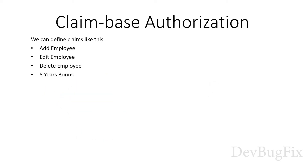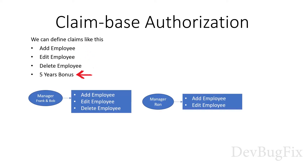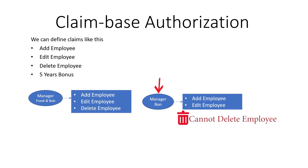We can define claims like this: add employee, edit employee, delete employee, and five year bonus. We will assign add, edit, and delete employee claims to managers Bob and Frank, and we will assign add and edit claims to manager Ron. So now manager Ron cannot delete the employee, but other managers Bob and Frank can delete the employee. So we have customized the permission of a manager by using claim based authorization.